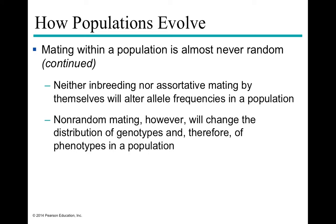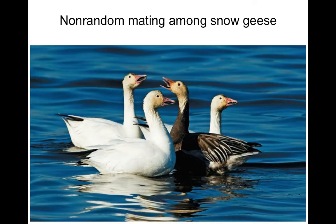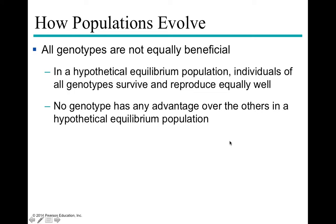A good example of assortive mating is the snow goose, which has two color phases: white and blue-gray. Mate choice is based on color — white geese tend to mate with white geese and gray geese tend to mate with gray geese. While inbreeding and assortive mating alone may not change allelic frequencies directly, non-random mating can change the distribution of genotypes and therefore phenotypes in a population.